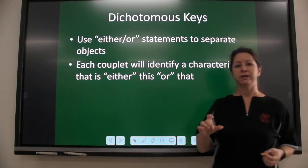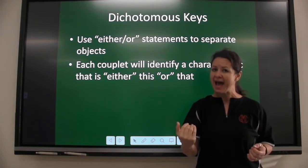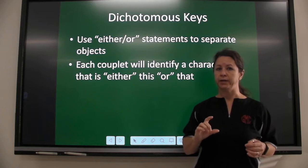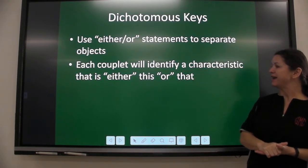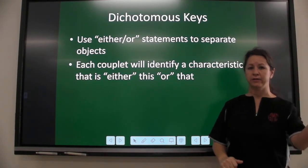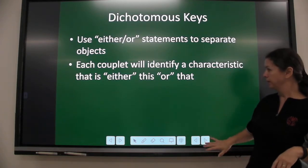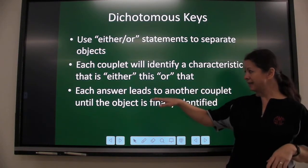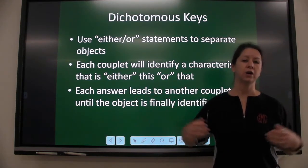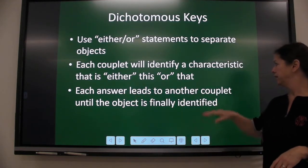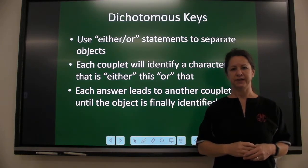Each pair of choices, since there are two — either this or that — is called a couplet. Each couplet will identify a characteristic that is either this or that, and each answer will lead to another couplet until the object is finally identified.